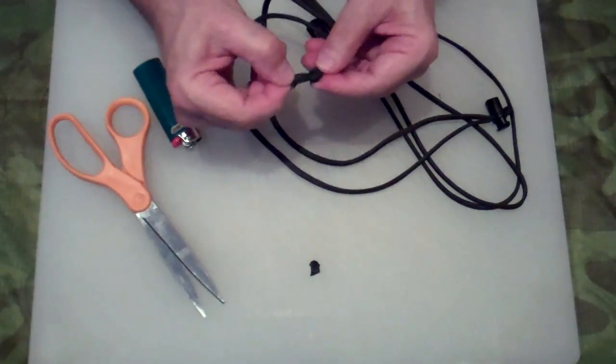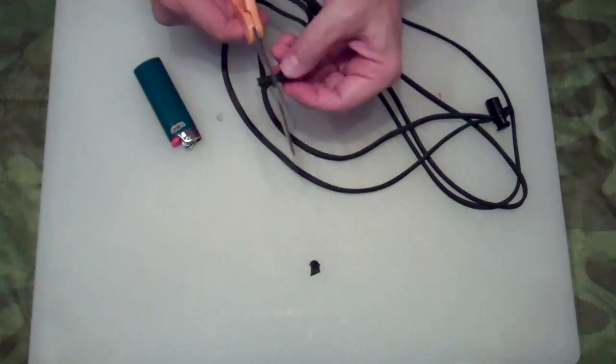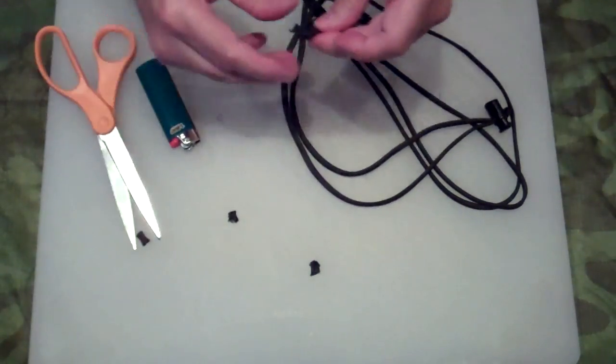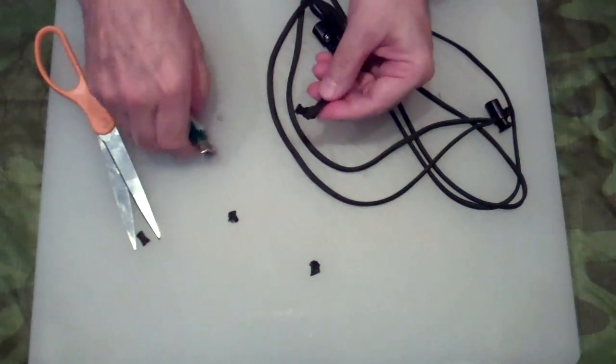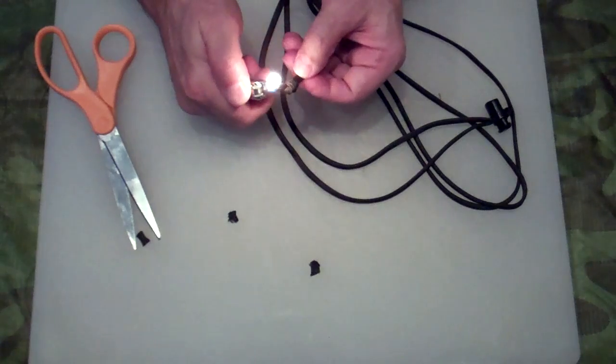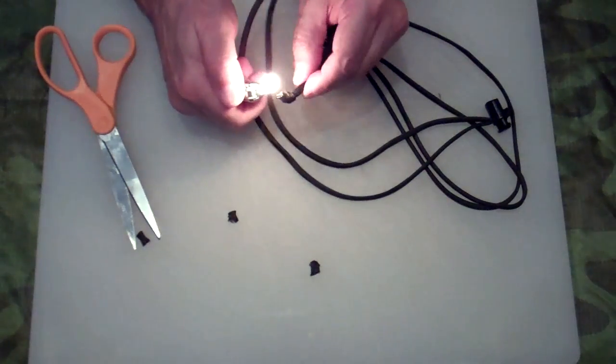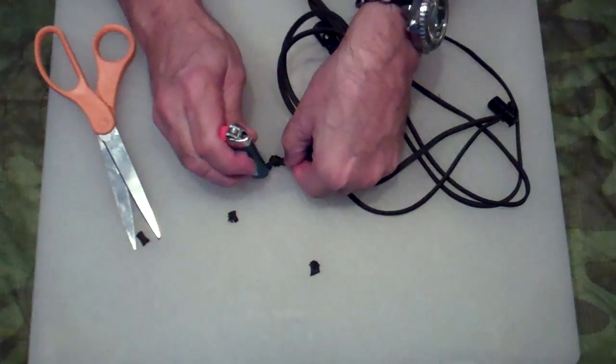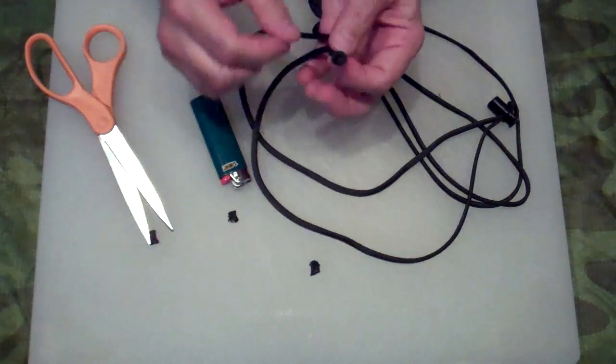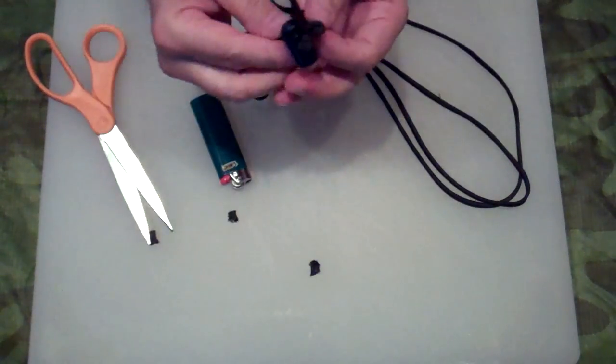Now to finish this end what I like to do is I like to cut it short and I like to fuse the ends together and tight to the knot. And then I just take the back end of the lighter and flatten it out. So there we have it. One is done.